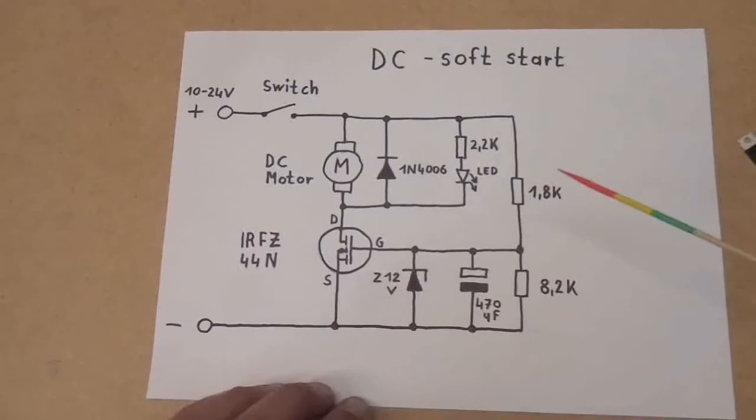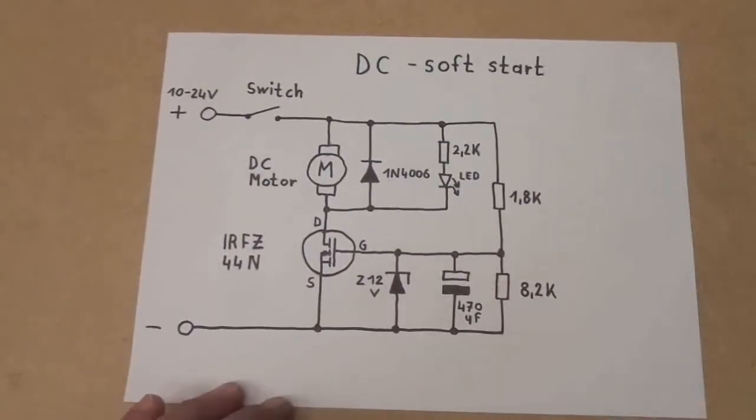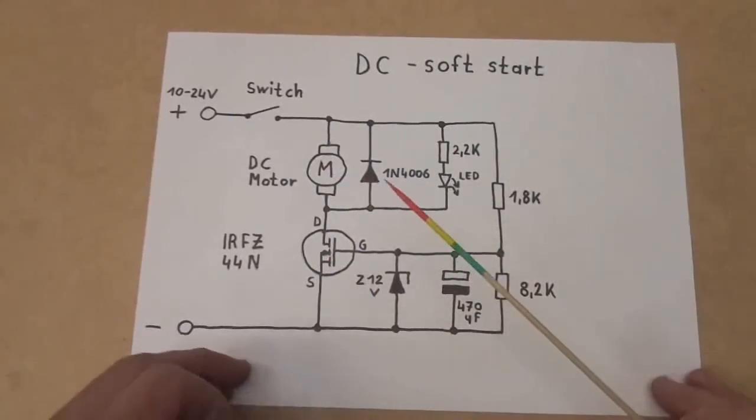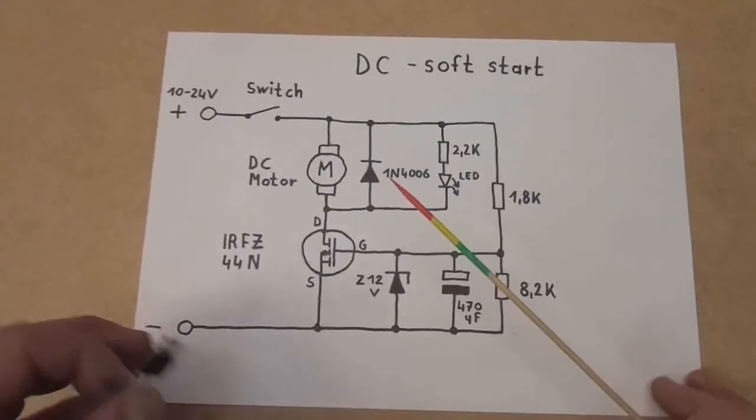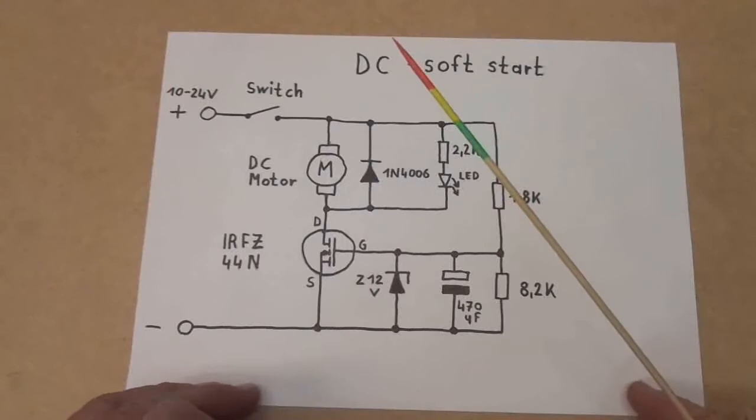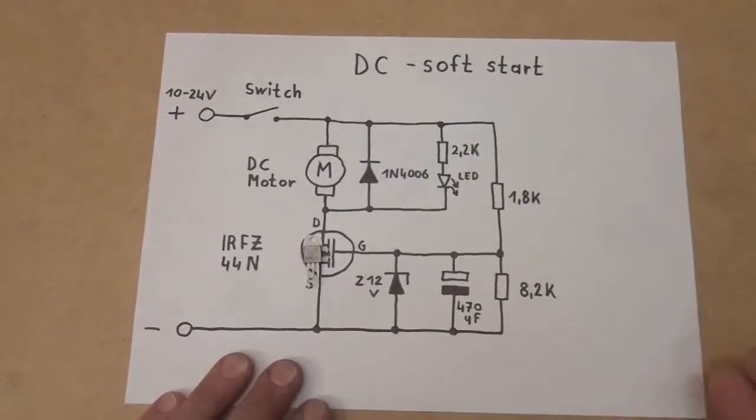So the maximum load which the circuit can handle in this configuration with one transistor is about 10 amps, so a maximum of 240 watts with one transistor on an appropriate heat sink.